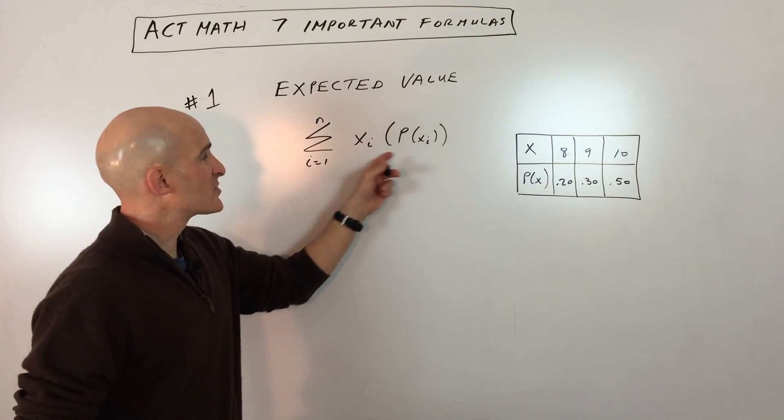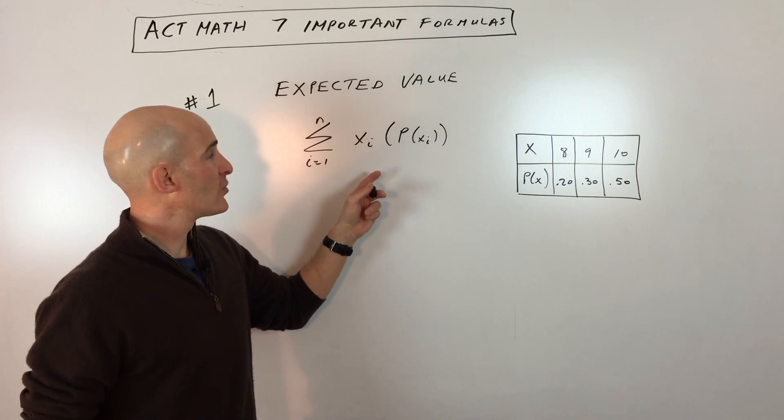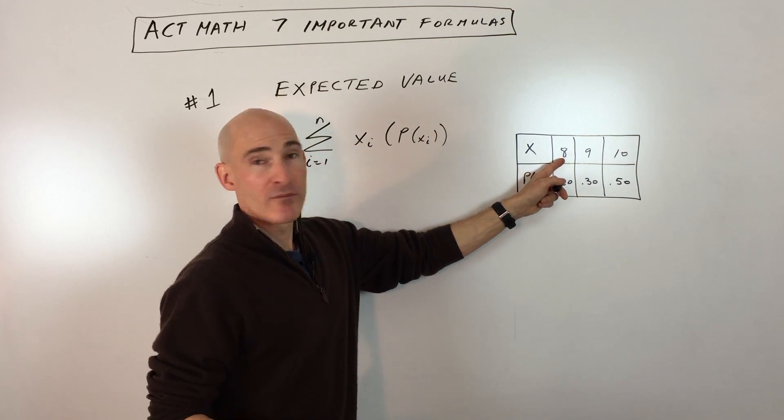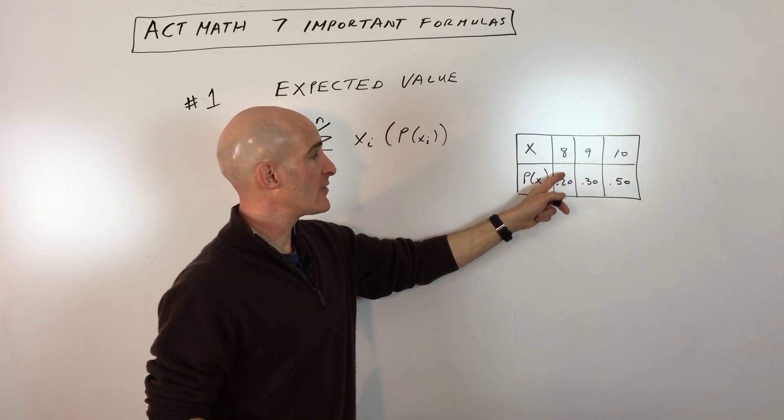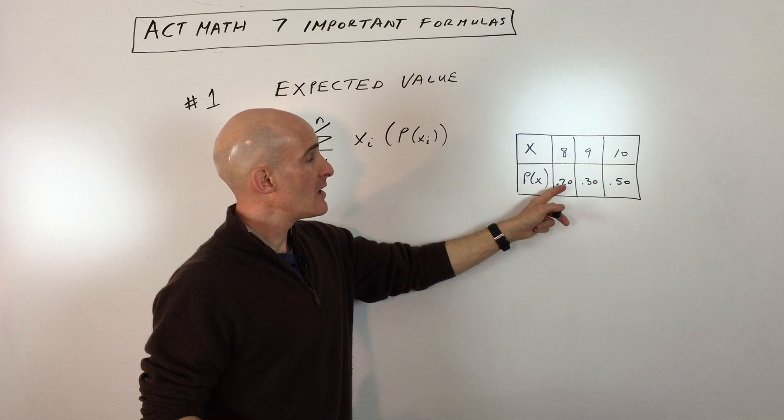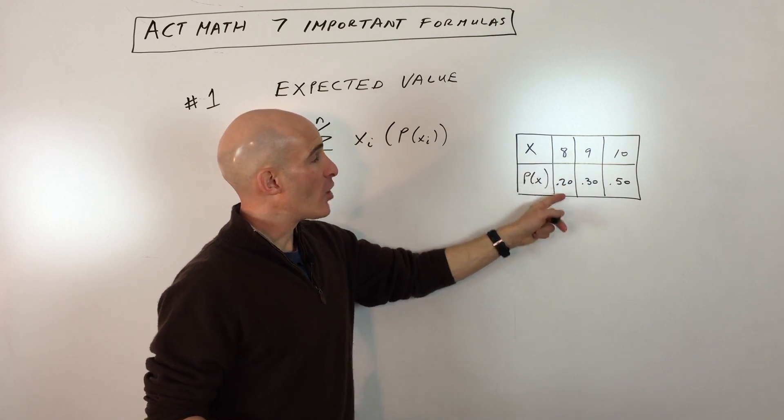And you can see from this formula, it looks a little complicated, but it's not as difficult as it looks. Basically what you're doing is you're taking the outcome, which in this case would be eight, like say for example, you were doing some kind of experiment, eight was the outcome, and you say, what's the probability of that outcome, 20%, you would multiply these together.